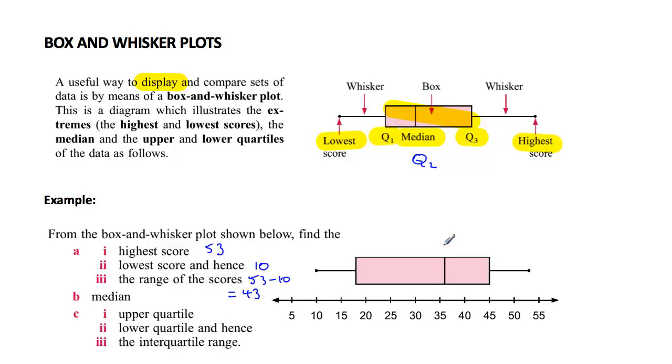Now the median score we can read straight off here, this is the quartile 2, the median score and reading it off we're going to give a value of 36 to the median score. The upper quartile, that's this one here or Q3, that's clearly 45.